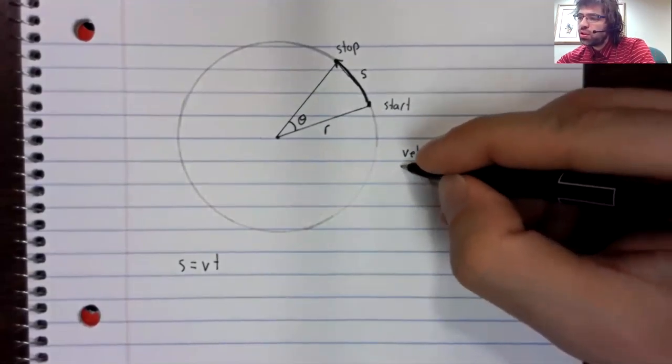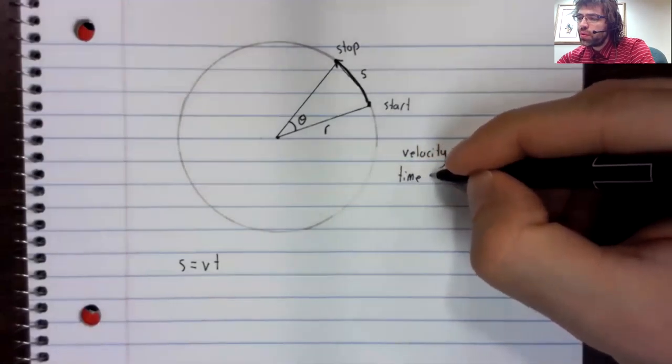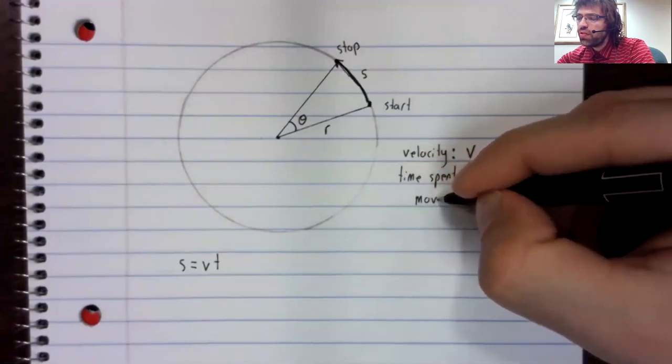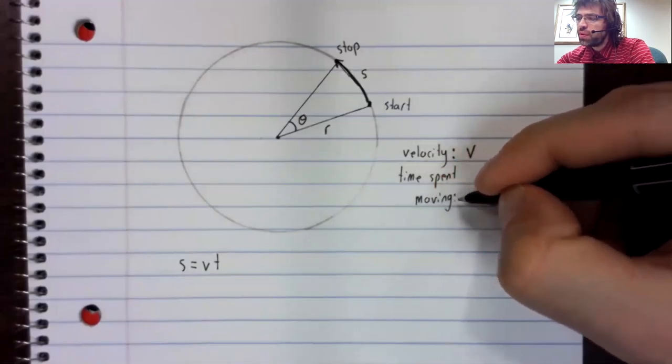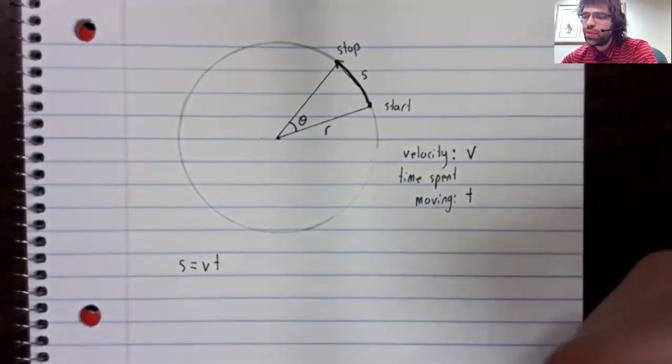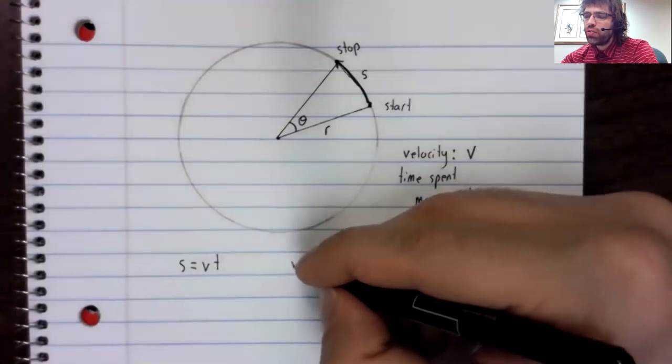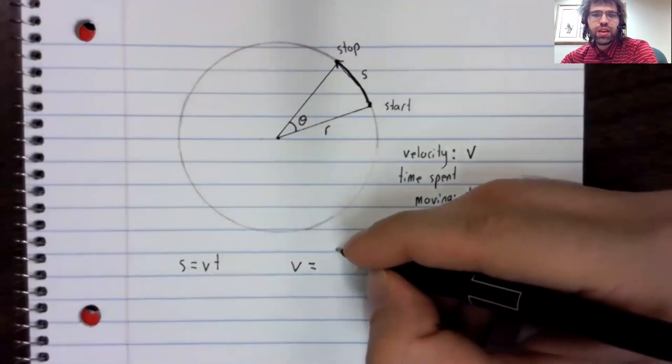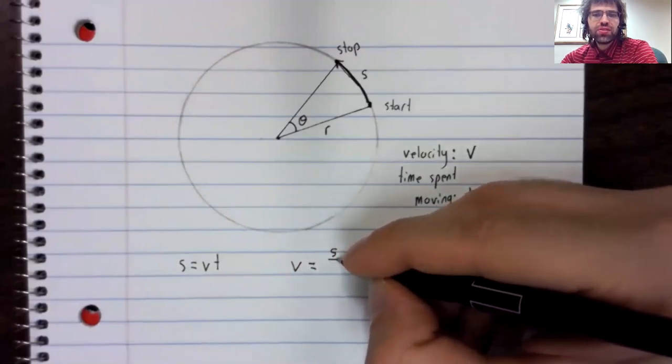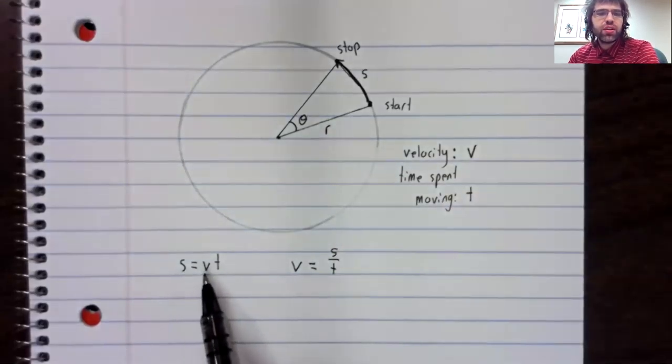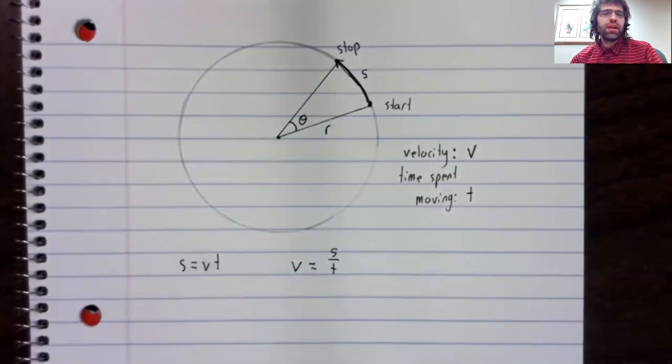The time we spent moving we are calling T. So here is one formula for the velocity: V equals S divided by T. Just take both sides of this equality and divide it by T.